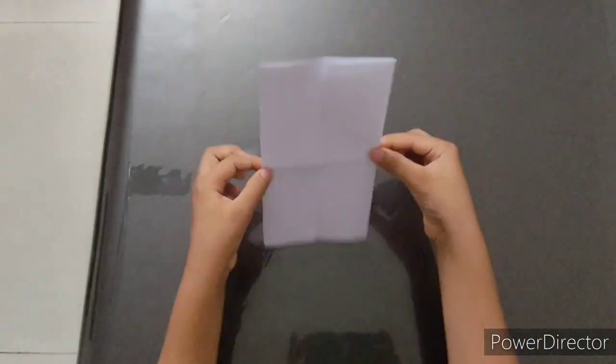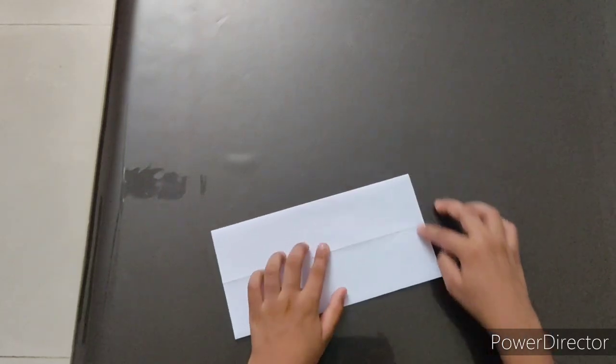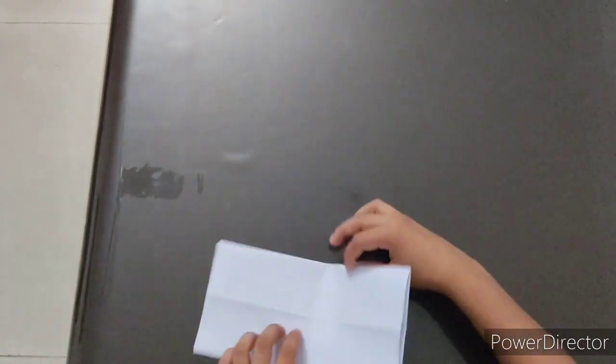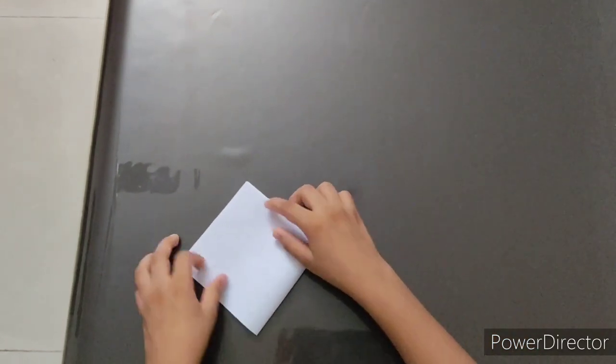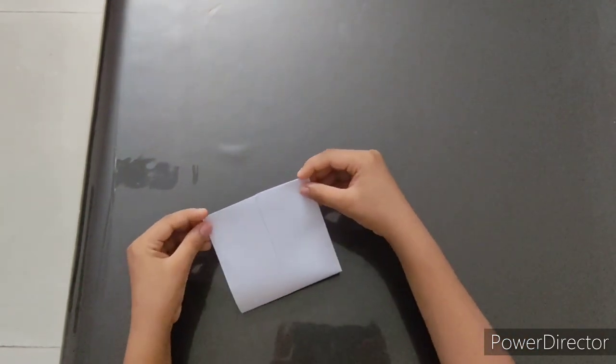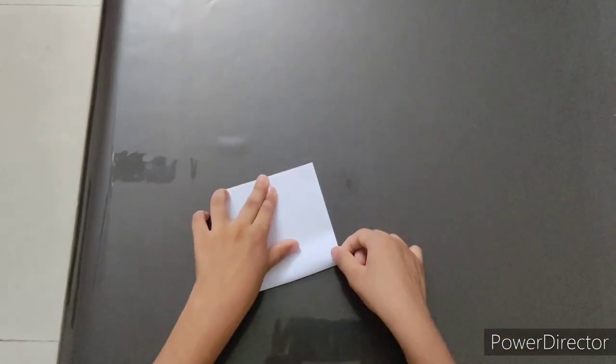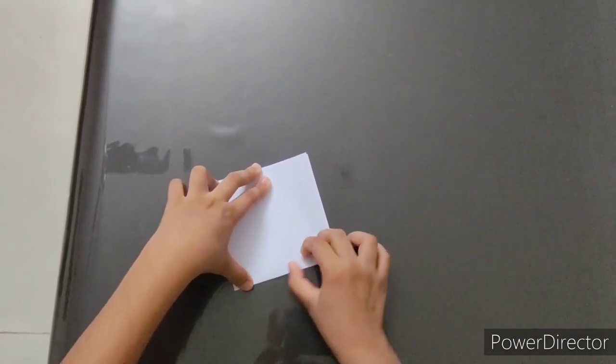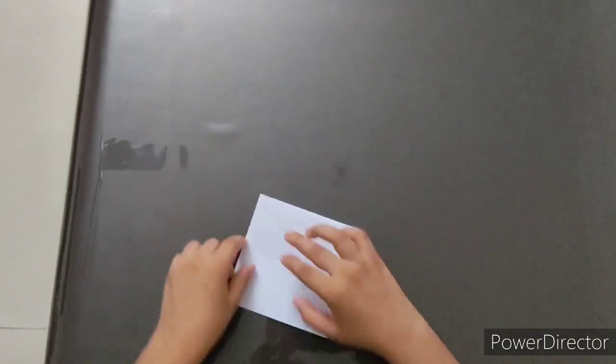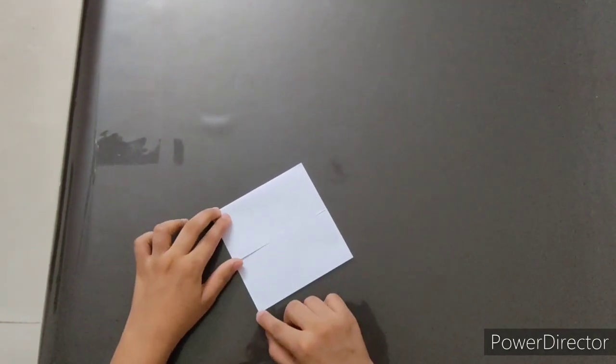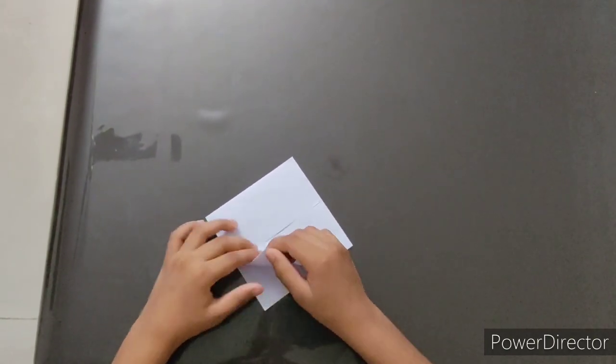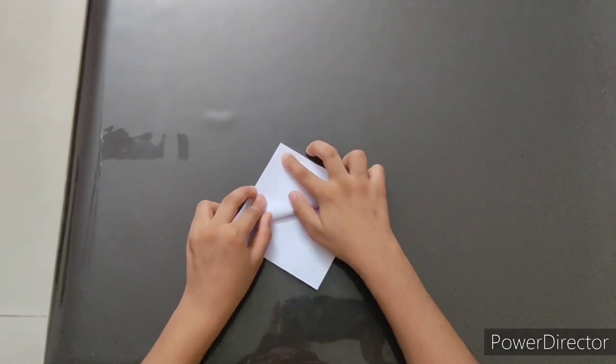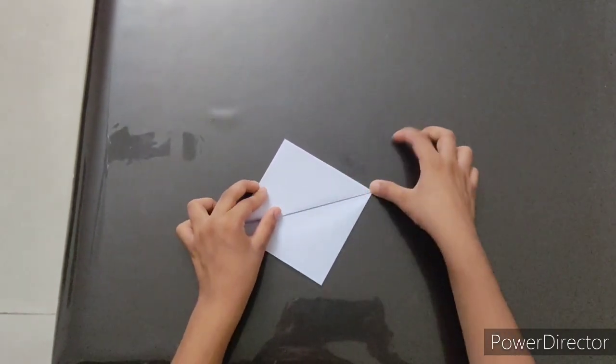Now, turn the paper over and fold this edge till here. Now, fold this edge till here so that it forms a triangle shape.